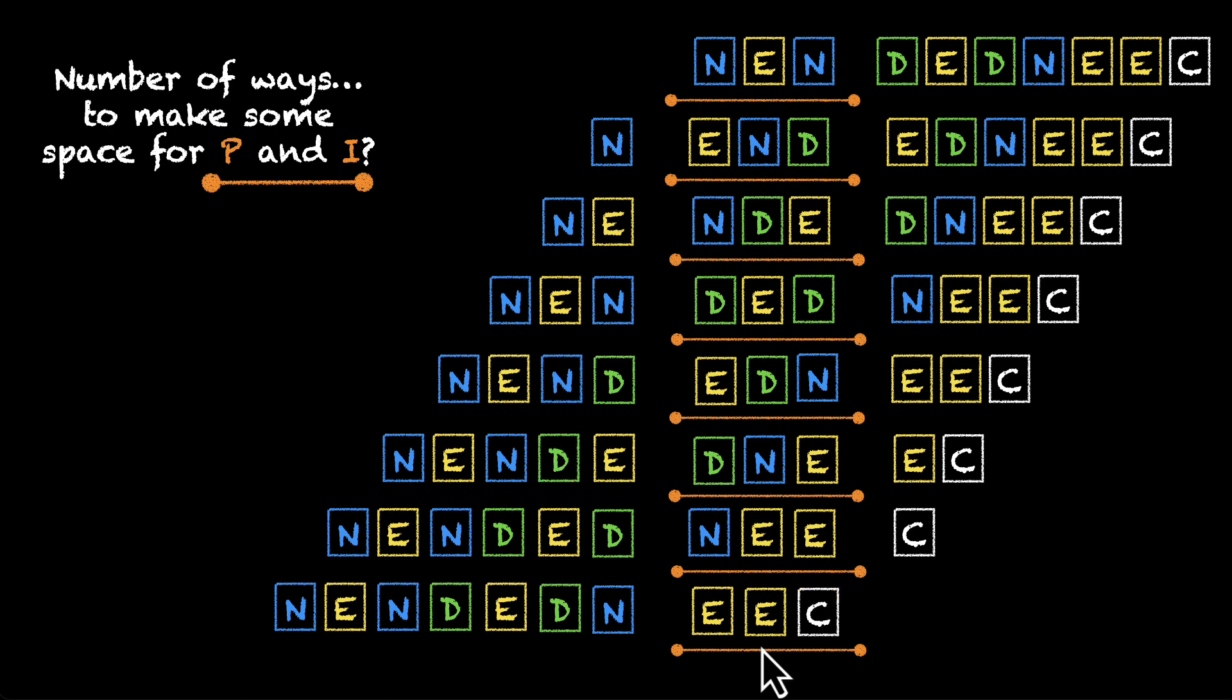So without changing the order, in how many ways can we make space for P and I? Let's count them. 1, 2, 3, 4, 5, 6, 7 and 8. There are 8 ways to make space in a specific arrangement for P and I. And with this, we have all the necessary pieces to solve our problem.